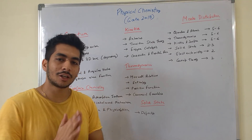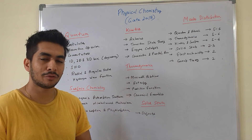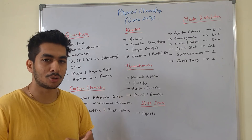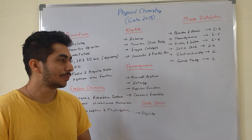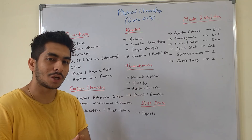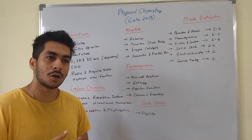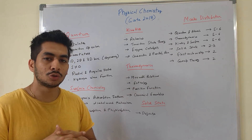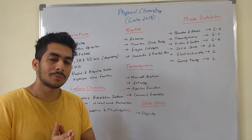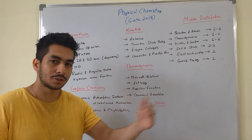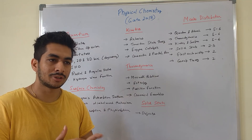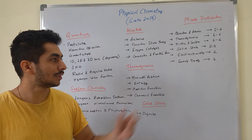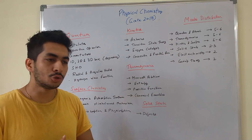For electrochemistry, if you are just starting to prepare for GATE physical chemistry, simply do the Nernst equation and the basic calculation of EMF of a cell — that's it. Nothing else from electrochemistry is needed, because it does not carry much weightage and out-of-the-box numericals in this area can be very difficult to tackle.